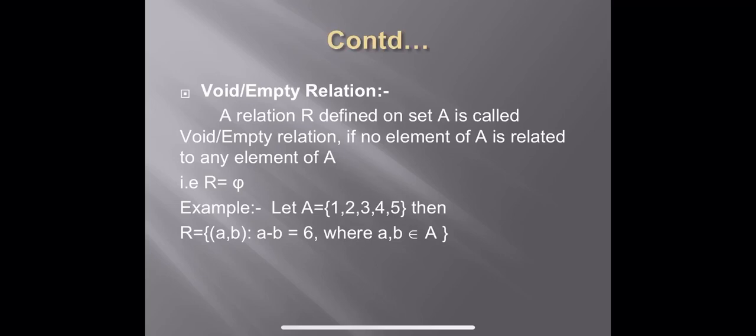For example, let A equal to {1, 2, 3, 4, 5}. Then R equals the set of ordered pairs (a, b) such that a minus b equals 6. Note the relation between a and b: their difference should be equal to 6, meaning first element minus second element equals 6, where values of a and b are taken from set A.